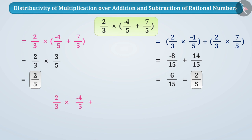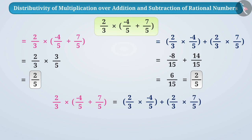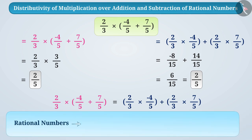So we can say that 2/3 multiplied by (−4/5 plus 7/5) is equal to 2/3 multiplied by −4/5 plus 2/3 multiplied by 7/5. In general, for any three rational numbers a, b, c: a multiplied by (b plus c) is equal to a multiplied by b plus a multiplied by c.